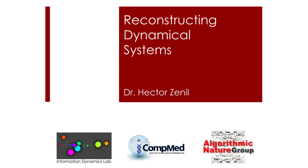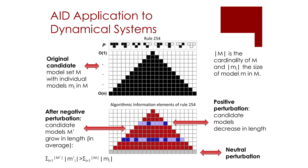We have here again an elementary cellular automaton — our favourite Guinea pigs — to illustrate how algorithmic dynamics and our algorithmic causal calculus works. This is rule 254, which basically turns every cell black, producing a characteristic cone.